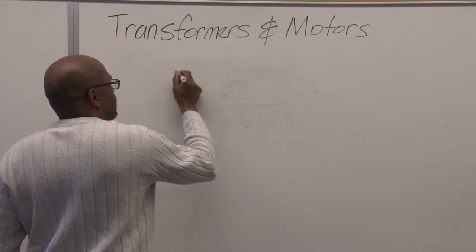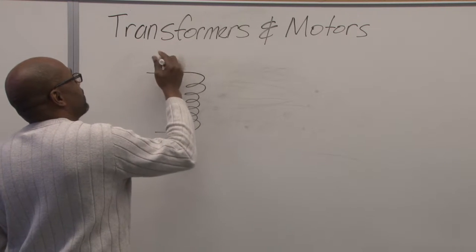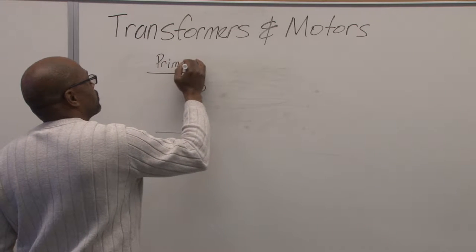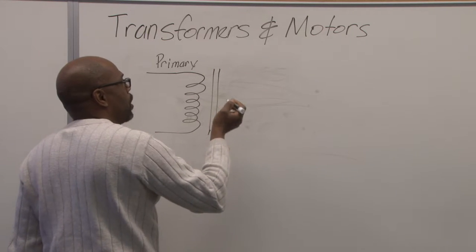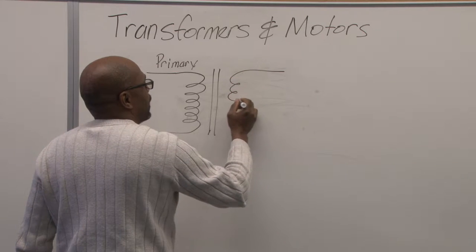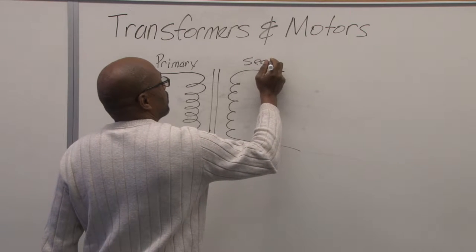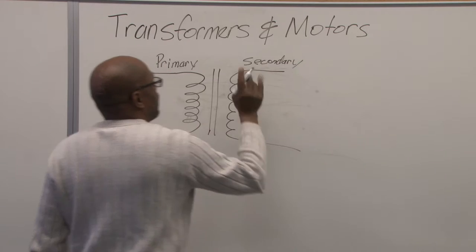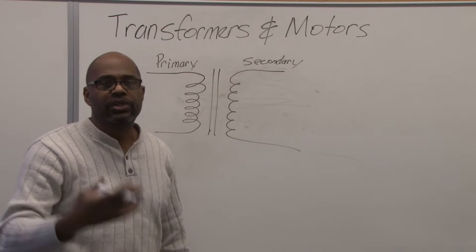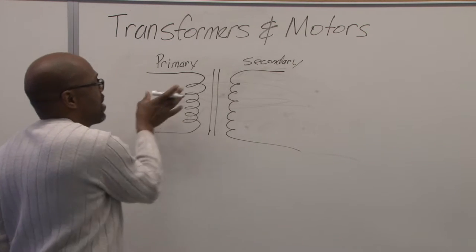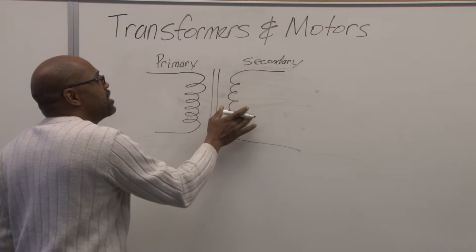And we have two sides of it. We have a primary side and we have what we call an iron core or sometimes an air coil core. And we have a secondary side. The primary side is where the power is actually introduced. The line voltage is introduced into the primary side to cause a magnetic field to be created, and it will be induced into the secondary side.